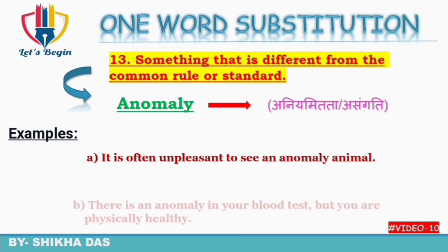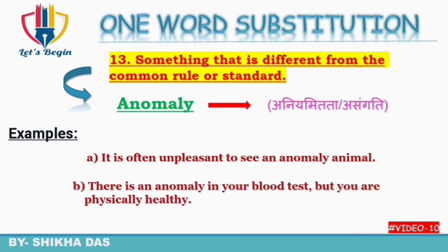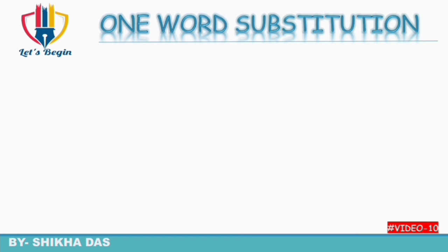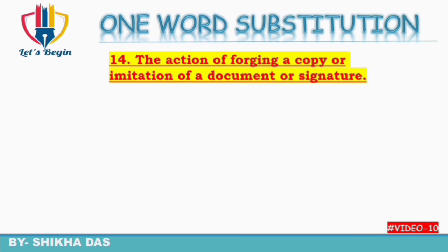Example: 'There is an anomaly in your blood test but you are physically healthy' — matlab tumhare blood test mein kuch asangati dikhi hai but you are physically healthy. So anomaly means asangati, aniyamittha.